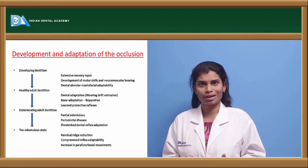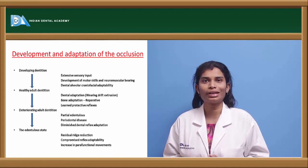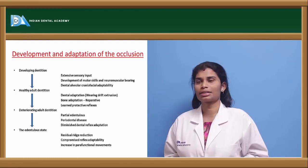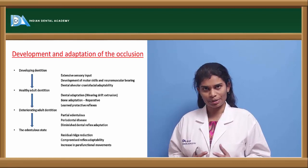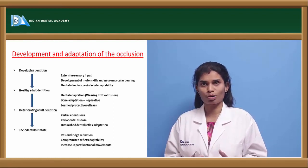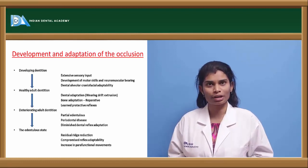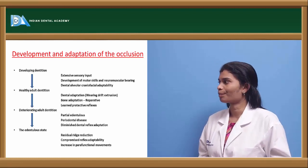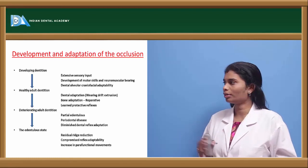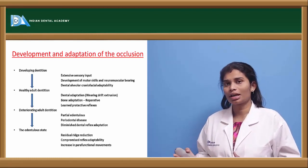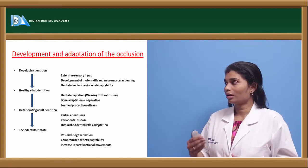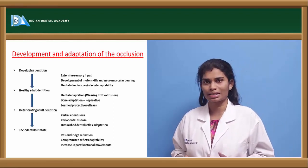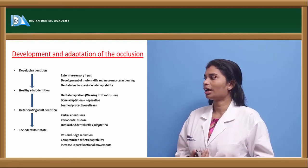In the childhood or infant stage, the oral cavity is not totally developed, but as the person ages, the neuromuscular system and the dento-alveolar system mature, leading to adaptation. The interaction between the three components — dental, craniofacial, and neuromuscular — leads to proper functioning and proper occlusion. In the healthy adult stage, dental adaptation continues, bone adaptation develops a reparative mechanism, and protective reflexes are added to the occlusion.